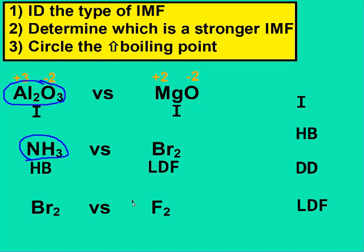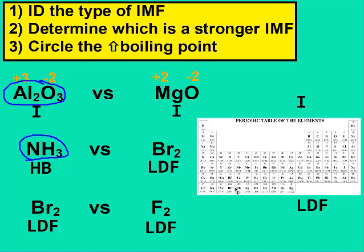For the last two, we just said that all diatomics are nonpolar, so both of those must be LDF. Looking at the periodic table, bromine has 35 times 2 electrons, while fluorine has 9 times 2 electrons — so 70 versus 18. Since bromine has more electrons, it has the stronger IMF and therefore the higher boiling point.